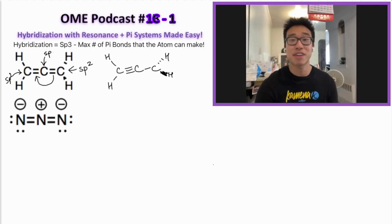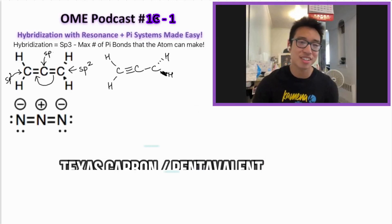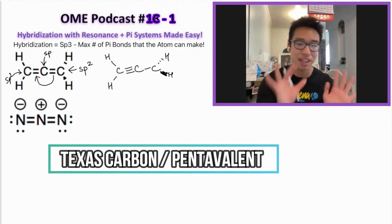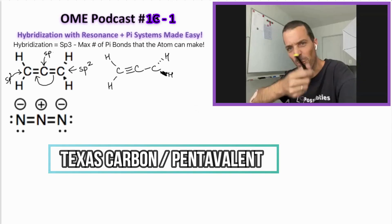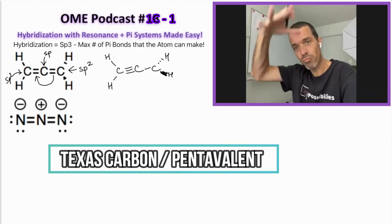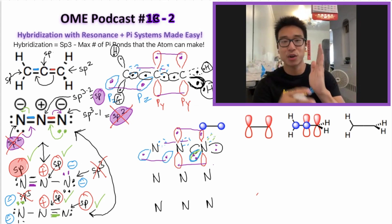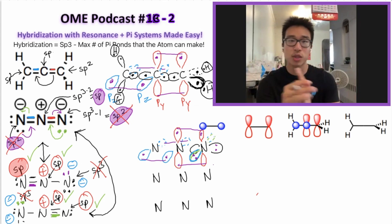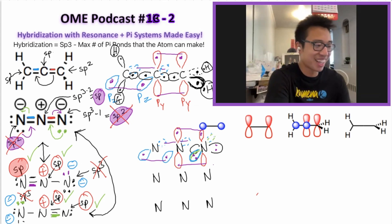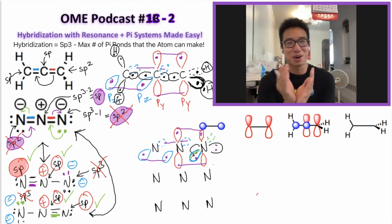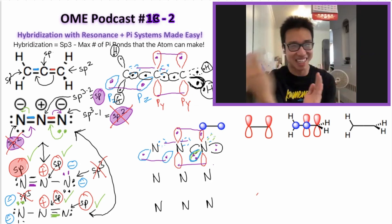You guys might hear 'pentavalent carbon' — a lot of professors use that term, pentavalent. So this is not in the py or pz orbital. You cannot resonate. You have to be in a p orbital if you're going to resonate.